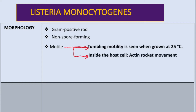Inside the cells, the kind of motility is like a rocket movement. These two kinds of motility tell us that this bacteria has the ability to live both inside and outside the cells of the host, so we call this a facultative intracellular organism.